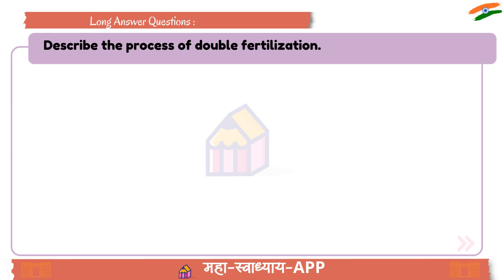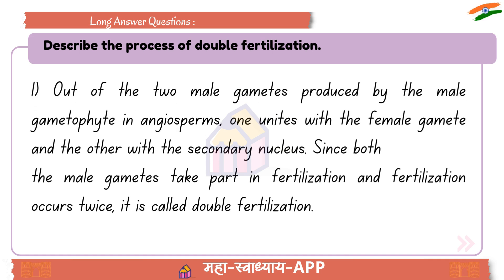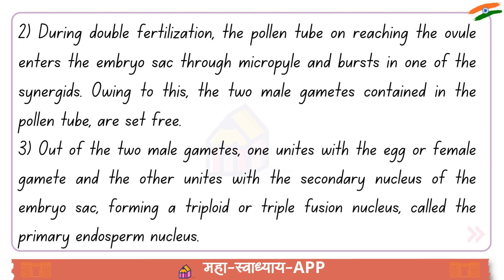Long answer question: Describe the process of double fertilization. Answer: One out of the two male gametes produced by the male gametophyte in angiosperms unites with the female gamete, and the other with the secondary nucleus. Since both male gametes take part in fertilization and fertilization occurs twice, it is called double fertilization.